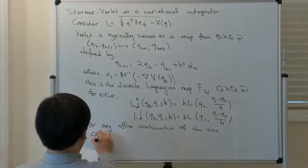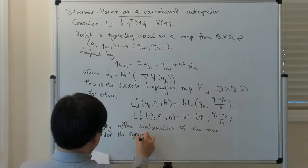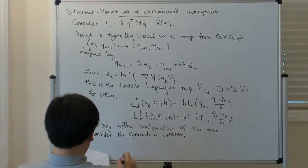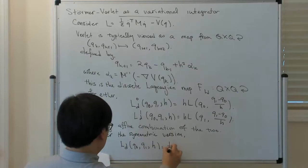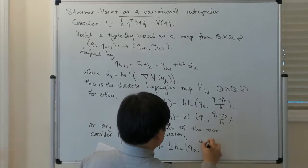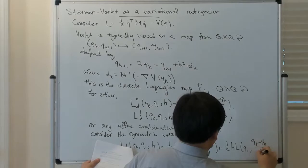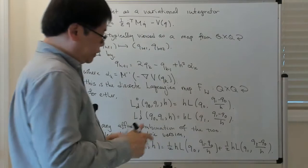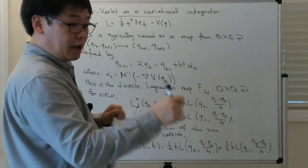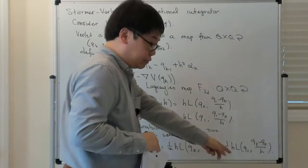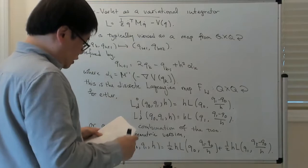In particular, let's consider the symmetric version: LD(Q0, Q1, h) = one-half·h·L(Q0, (Q1−Q0)/h) plus one-half·h·L(Q1, (Q1−Q0)/h). You can think of this as what you would get if you interpolated the curve between Q0 and Q1 by a linear interpolant, then approximated the action integral by the trapezoidal rule.